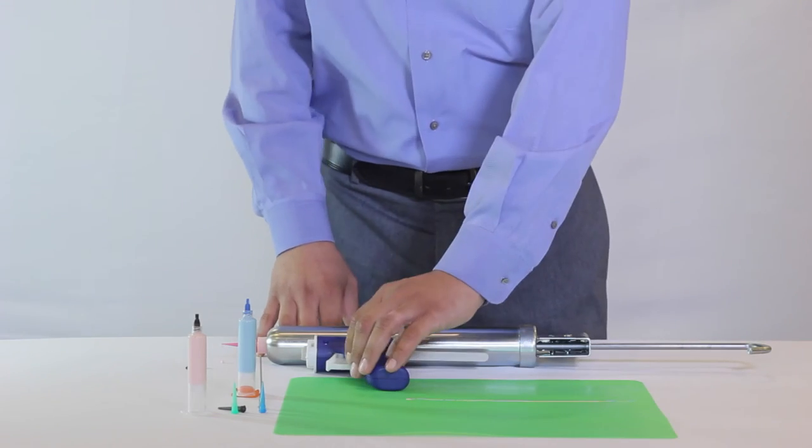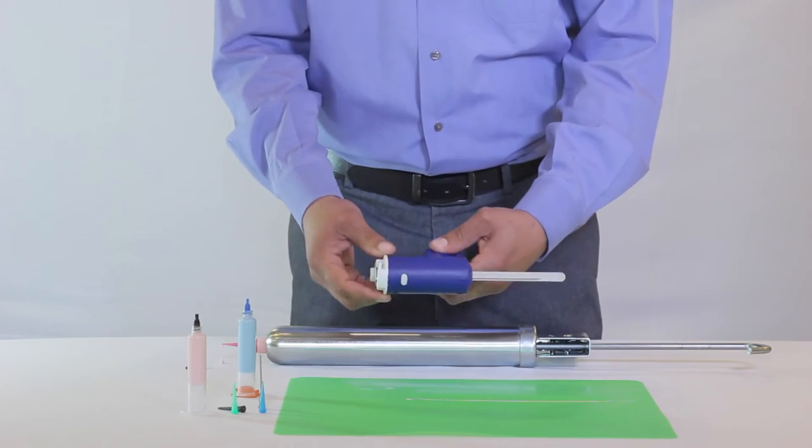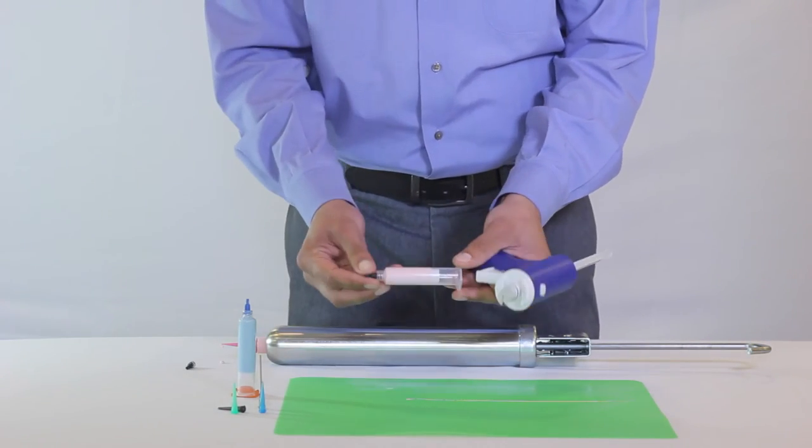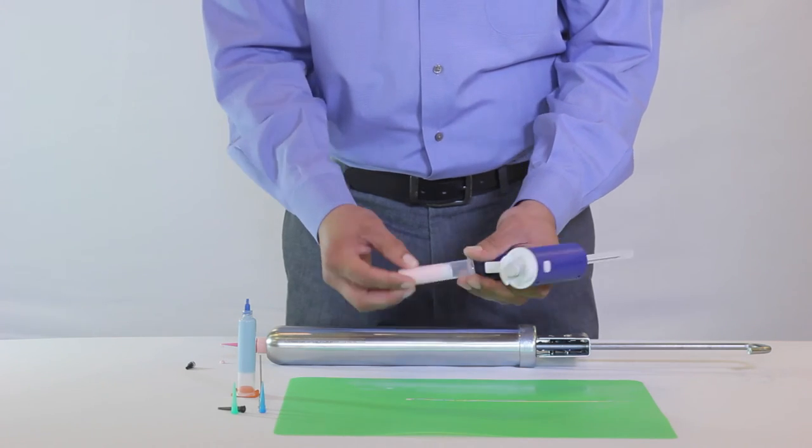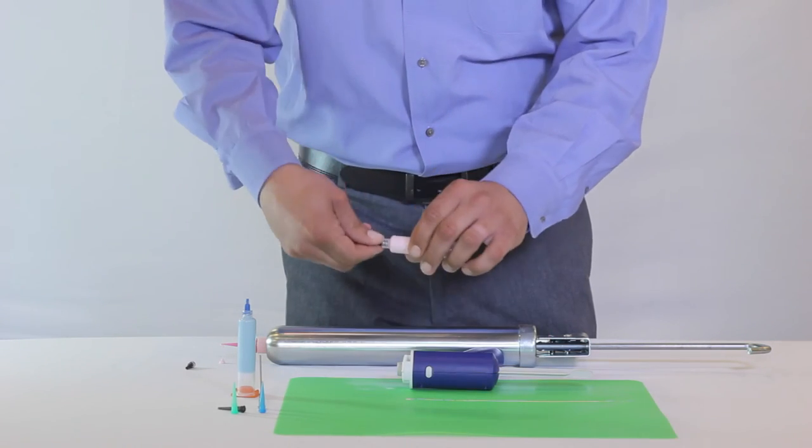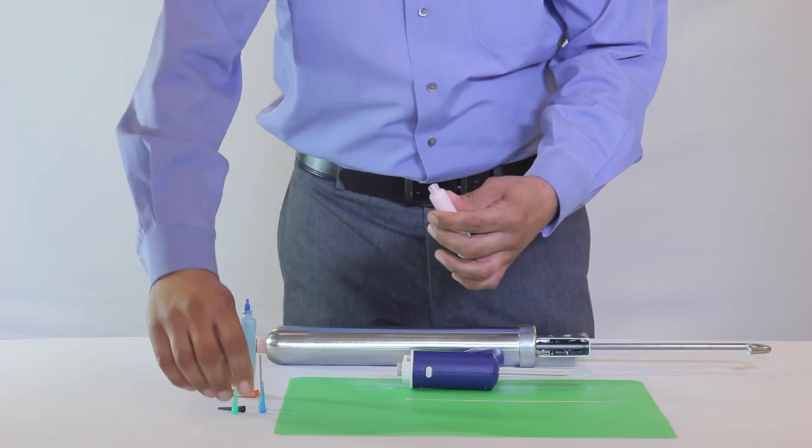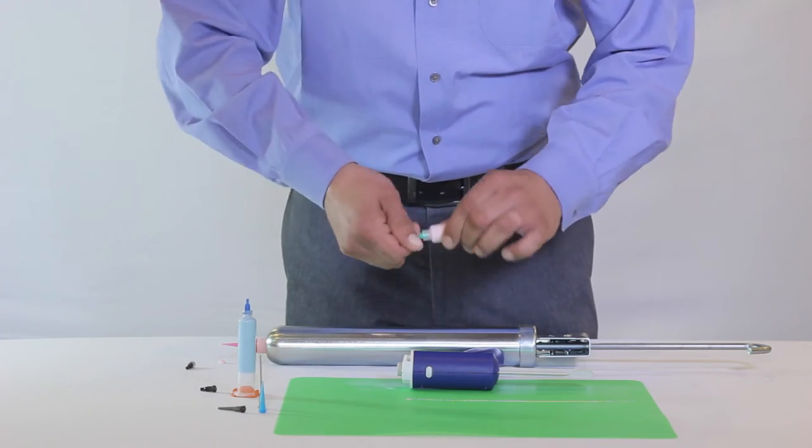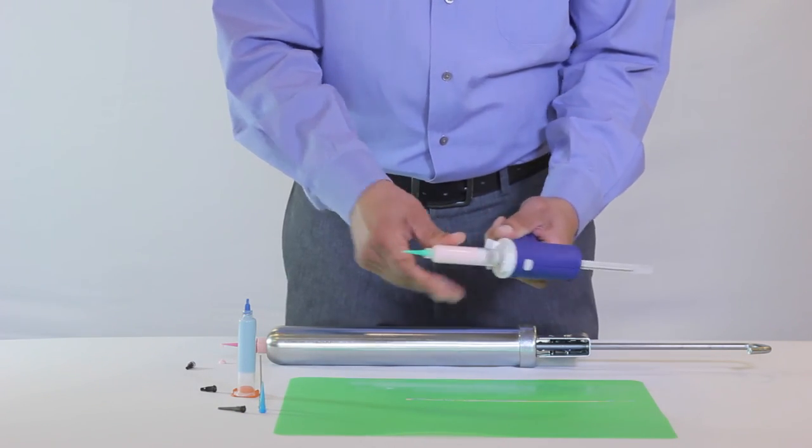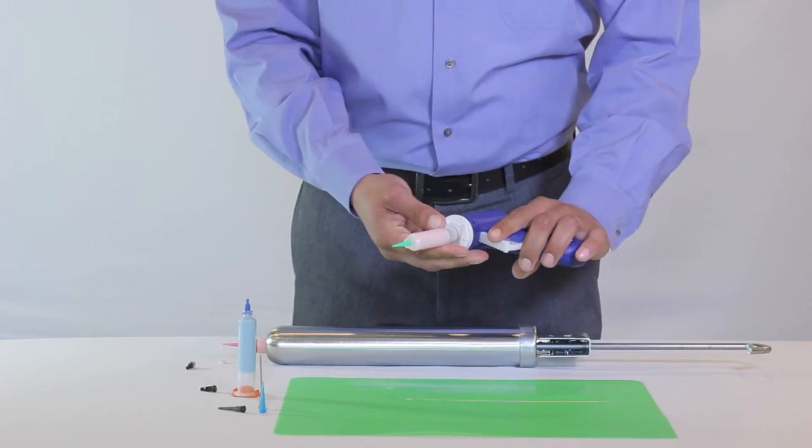Next is our 10cc manual syringe gun designed to accept a pre-filled air syringe. Remove the tip cap from the syringe and apply your desired dispensing tip. To attach the syringe barrel to the manual gun, twist and lock the flanges into place.